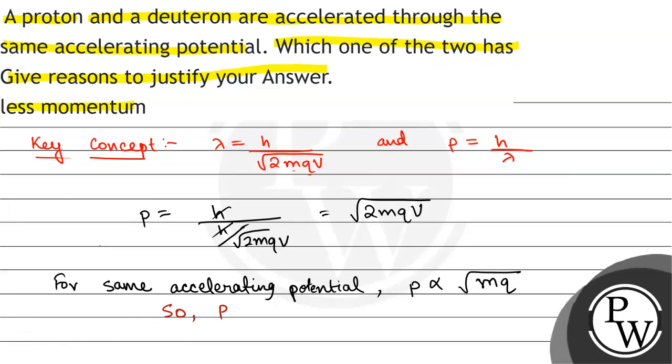So momentum of proton by momentum of deuteron will be equal to root under mass of proton into charge of proton divided by mass of deuteron into charge of deuteron. Mass of deuteron is twice the mass of proton, and charge on deuteron is equal to charge on proton. So this will be equal to 1 by root 2.